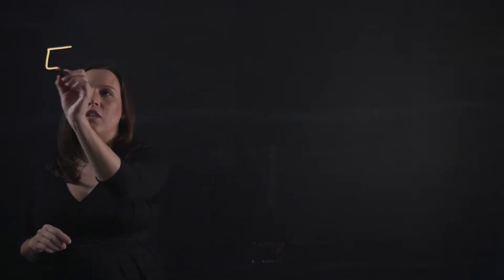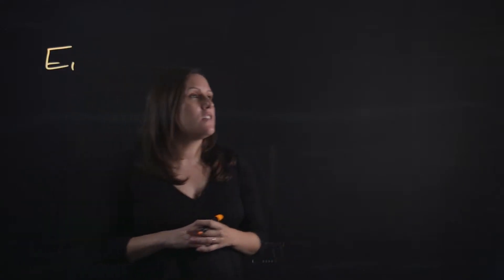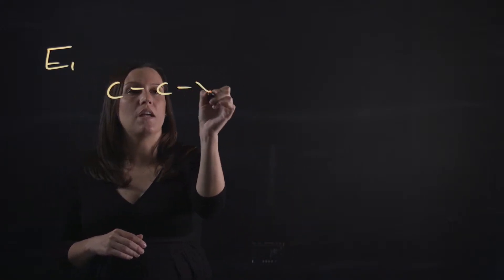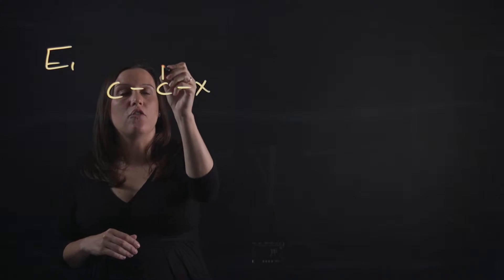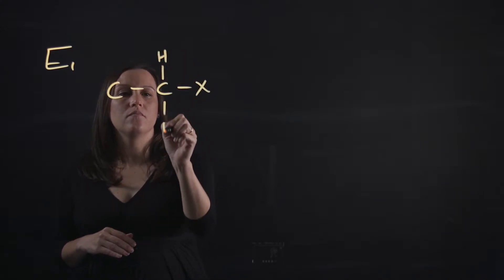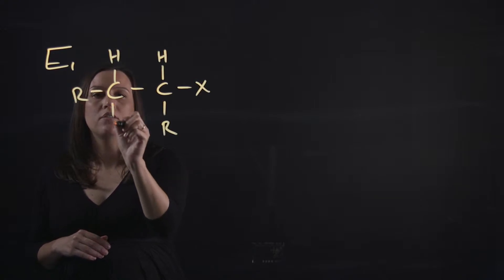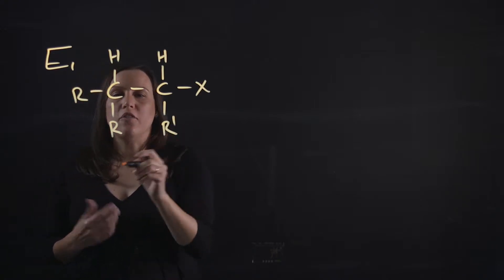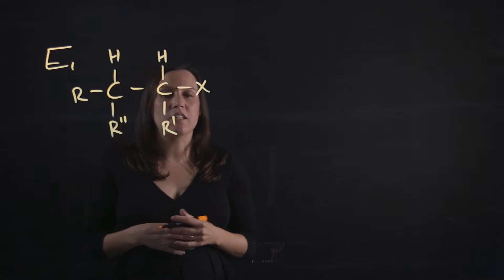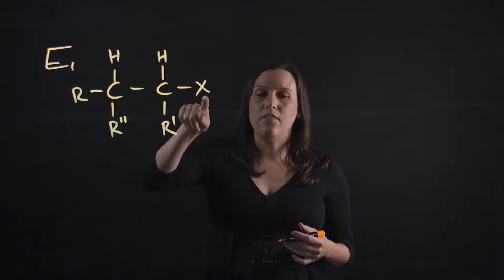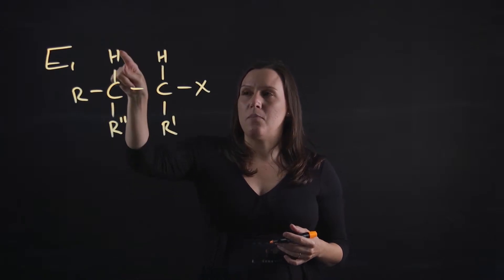First of all, I'll go through the E1 mechanism. If I draw out a compound here, it's got a very good leaving group there. We've got a beta hydrogen and these R groups can be the same or different, it doesn't matter. So we've got our alpha carbon with our leaving group, we've got a beta carbon with our beta hydrogen.